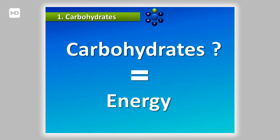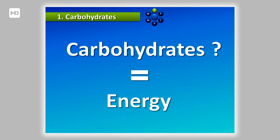What are carbohydrates? In simple terms, carbohydrates equal energy. Carbohydrates provide a source of energy for us to function and move, and are broken down into glucose, which is a form of sugar that our body uses for energy. There are two types of carbohydrates: simple and complex, or sugary and starchy.